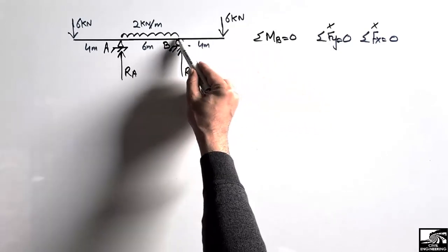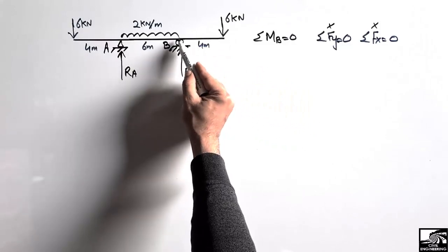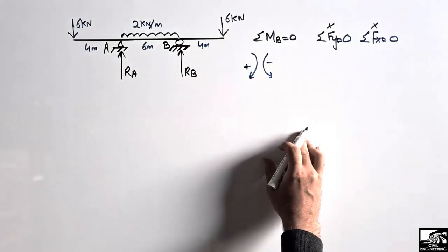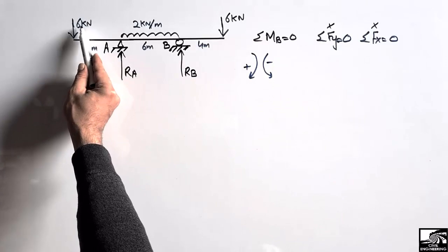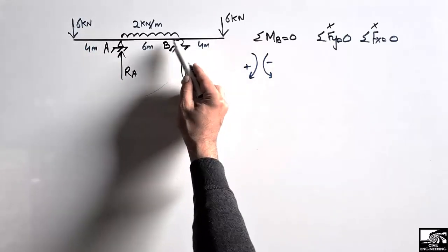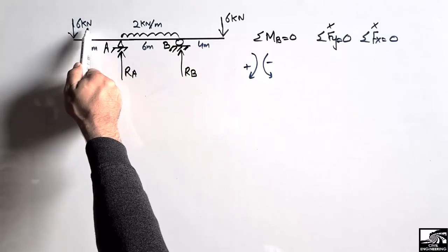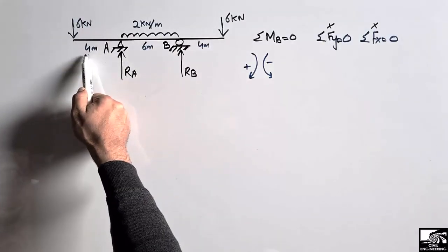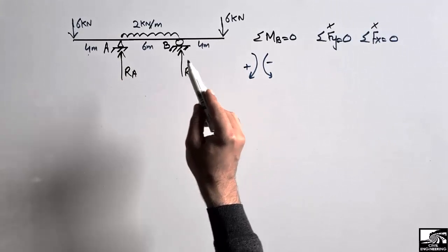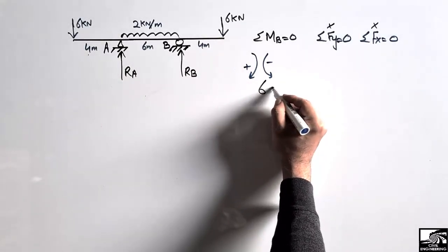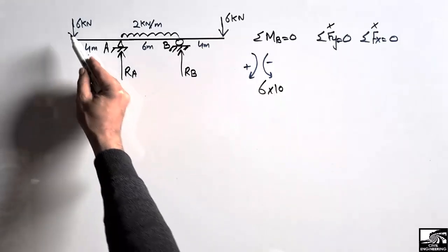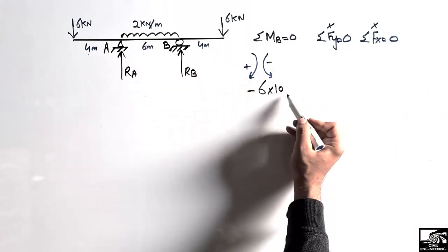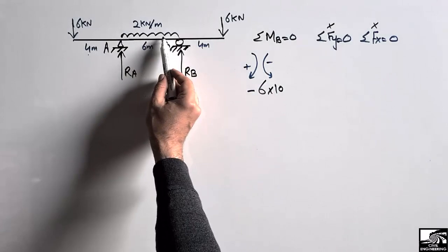Summation of moment at point B equals zero. We take clockwise moment as positive and anti-clockwise as negative. Starting from the left end, the 6 kilonewton load acts anti-clockwise about point B. Its moment arm is 4 plus 6 equals 10 meters, so the moment is minus 6 multiplied by 10. The distributed load of 2 kilonewton per meter also acts anti-clockwise about point B.